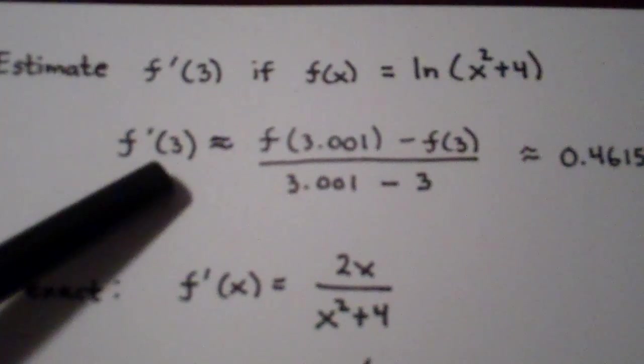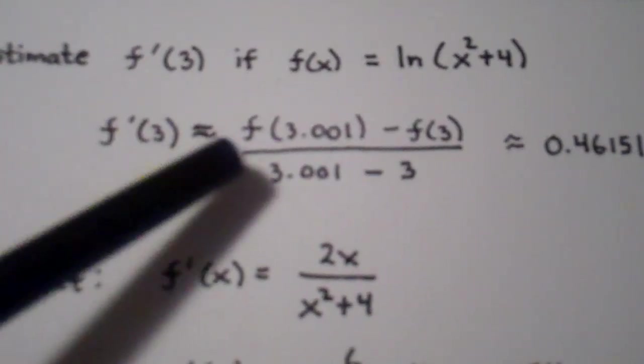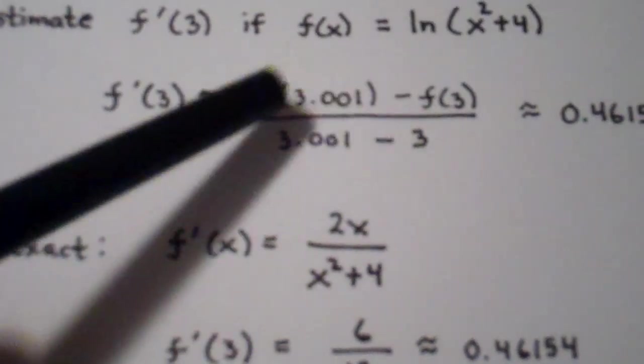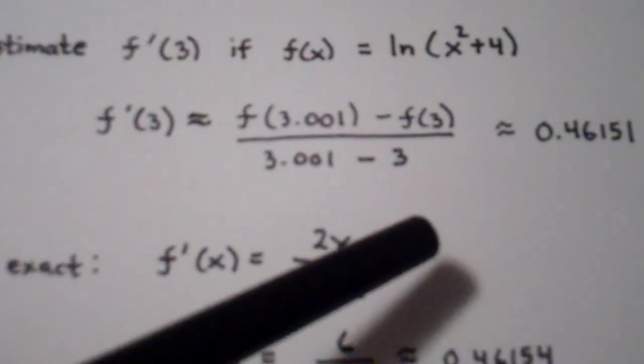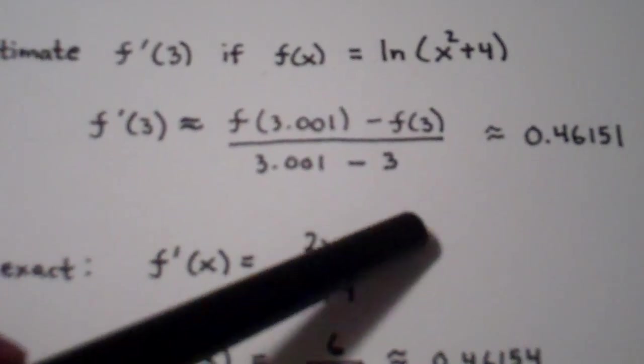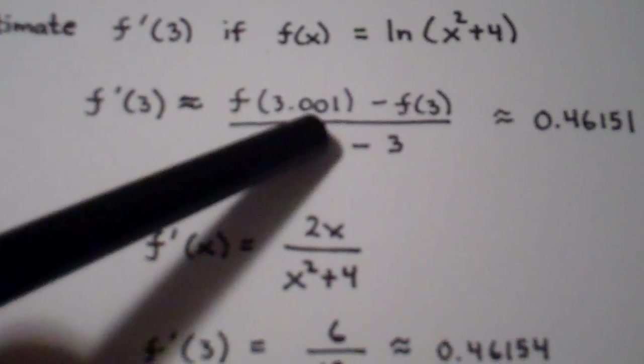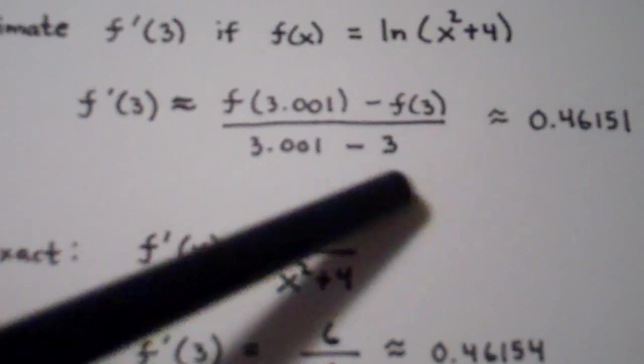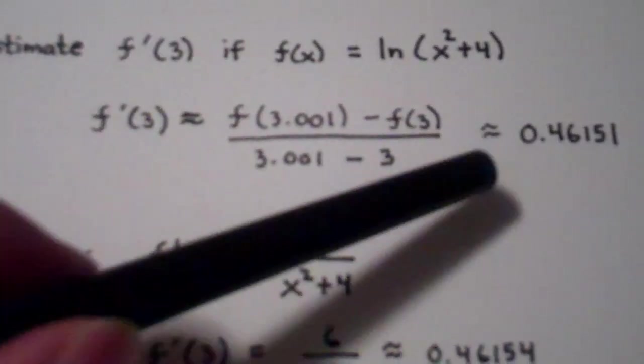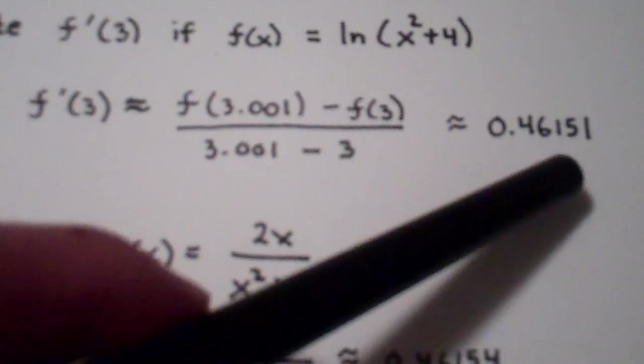So, the value of the derivative at 3, f'(3), is going to be approximately equal to—so what I did here is I took a point that's just a little bit beyond 3. In this case, I picked 3.001. And I calculate the slope of the secant line that passes through 3 and 3.001, also called the average rate of change. So I take the change in the output values, or the change in the y values, which is f(3.001) minus f(3), and I divide that by the change in the input values, which is 3.001 minus 3, and once again, I'll let you do the calculations there. But when you do these calculations, we get approximately 0.46151.